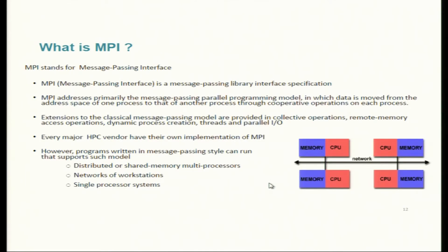MPI allows more control over data location and flow compared to shared memory models, where we can encounter race conditions. Here we have much higher control of our data, and of course we can expect performance — at exascale and beyond — because of the performance that such programming models enable. MPI stands for Message Passing Interface. Like OpenMP, it is a specification and set of guidelines that any implementation follows so that it is portable.